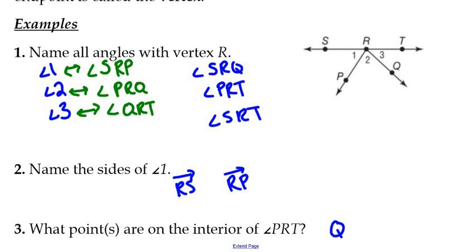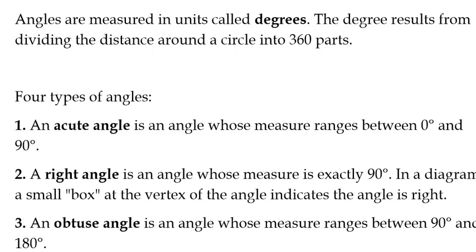Let's talk about different types of angles here. Angles are measured in units called degrees. The degree results in dividing the distance around a circle into 360 parts, hence 360 degrees. If you look at compasses, that's why they're divided into 360 degrees. Due north is at 360 degrees or zero degrees. Due east is 90 degrees. Due south is 180 degrees. And due west is 270 degrees.